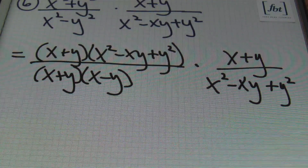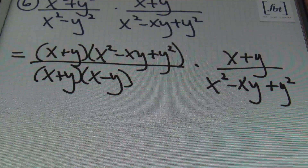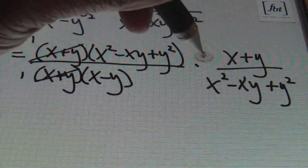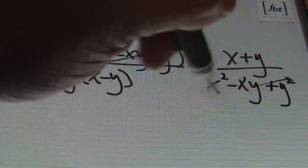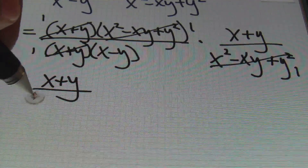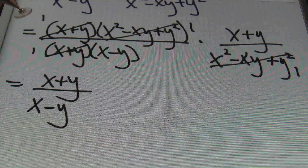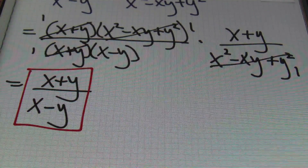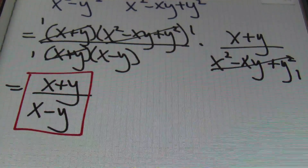We look to simplify before we multiply — looking for identical factors that can be canceled out. x plus y goes into itself once here, and x plus y goes into itself once there. The trinomial x squared minus xy plus y squared is identical to the one in the denominator, so that cancels out too — goes into itself once here and once there. What you're left with is x plus y over x minus y. And that's it. The x's and y's — you can't do anything with them. It's simplified; don't even try to reduce it further.